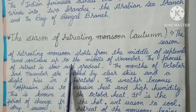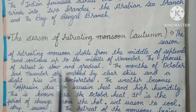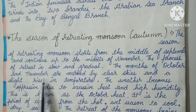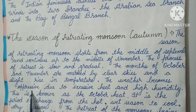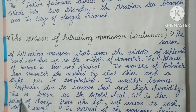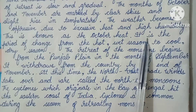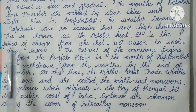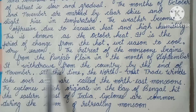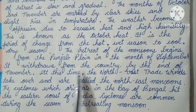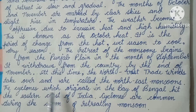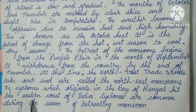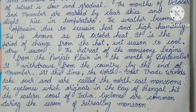The season of retreating monsoon starts from the middle of September and continues up to the middle of November. The process of retreat is slow and gradual. The months of October and November are marked by clear skies and a slight rise in temperature. The weather becomes oppressive due to excessive heat and high humidity — this is known as the October heat. It is a period of change from the hot, wet season to the cold, dry season. The retreat begins from the Punjab plains in September and the country is fully withdrawn by the end of November. At this time, the northeast trade winds take over and are called the northeastern monsoons. Cyclones originating in the Bay of Bengal hit the eastern coast of India and are common during the retreating monsoon season.